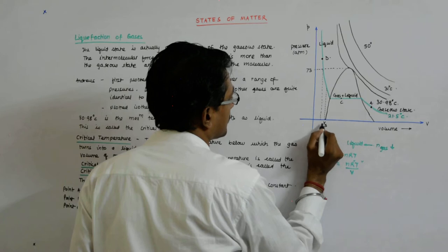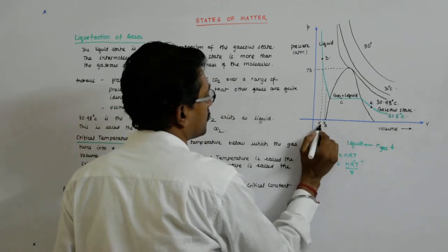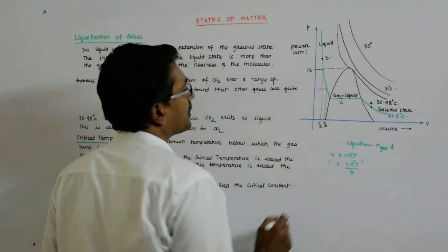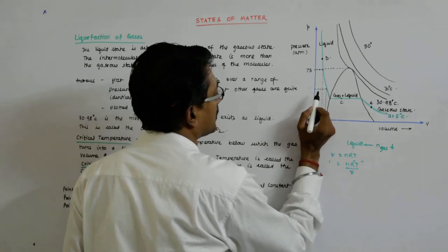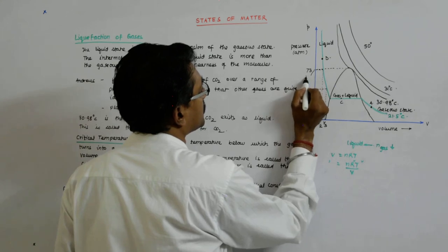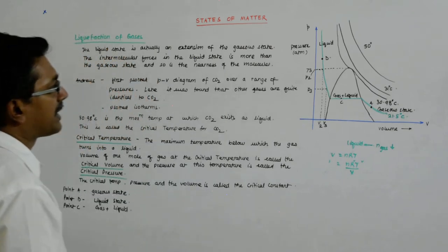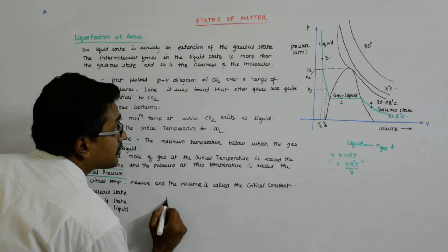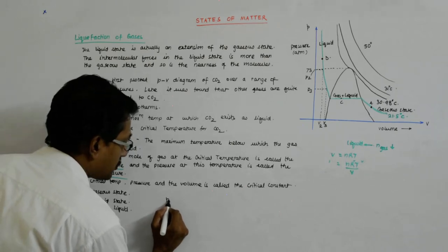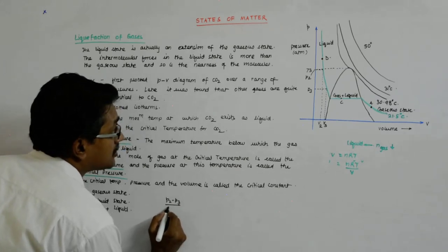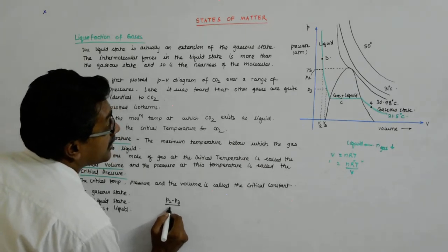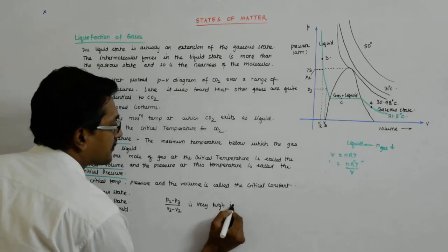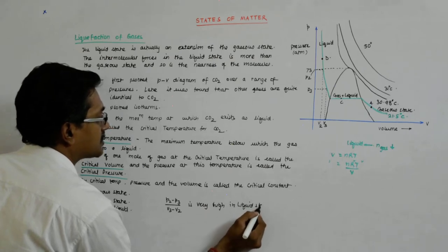I have to increase the pressure from, say here to here. This is P2 and this is my P3. So delta P upon delta V value in the liquid state becomes very, very high. So P2 minus P3 upon V3 minus V2 is very high in liquid state.